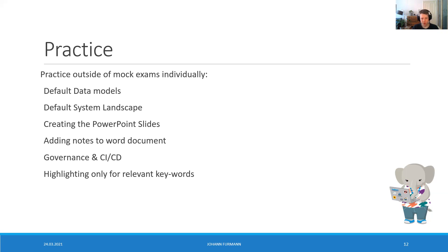This is the practice part. You have to do a lot of mock exams absolutely, but you can practice a lot of this outside of mocks individually. Draw your default data model for Sales Cloud, Service Cloud, Field Service Lightning, CPQ — over and over again. Create PowerPoint slides, delete, create again, delete — do this for half an hour or an hour; you become so much faster. Practice adding notes to the Word document beautifully, practice governance and the CI/CD part — if you fail governance and CI/CD, I'm personally disappointed. Practice highlighting — it's one of the most important things I learned in CTA coaching.